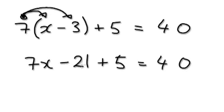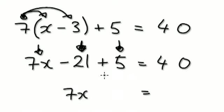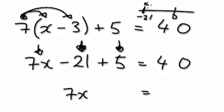Single numbers on their own are like one entity — you can merge them. You can merge this one and this one. You've got to leave the x term alone because it's totally different — it's like an elephant. Merge the two giraffes. So minus 21 plus 5: draw a number line, start at minus 21 and then add 5. You would be at minus 16.